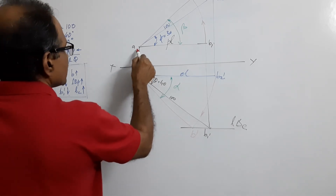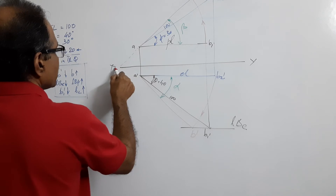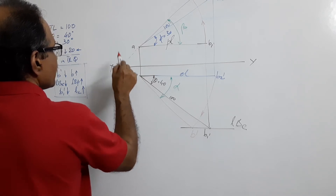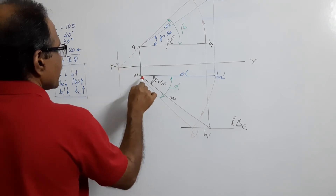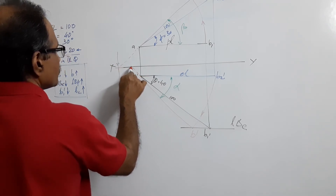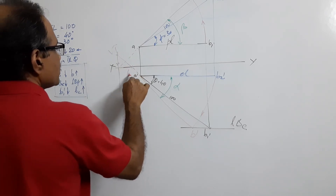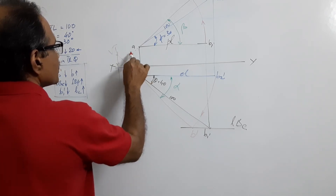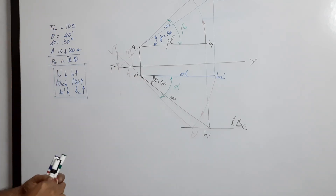From the plan, if necessary, cut XY at V. Draw a vertical line through V and extend the elevation through V. T, H — I hope that's clear.